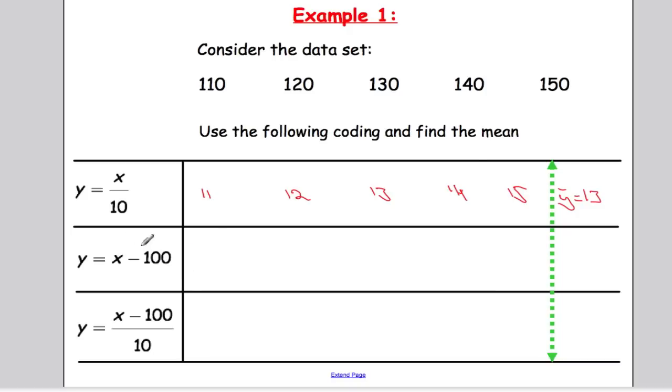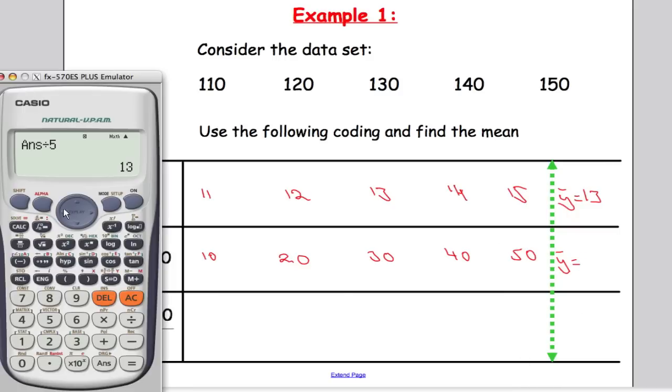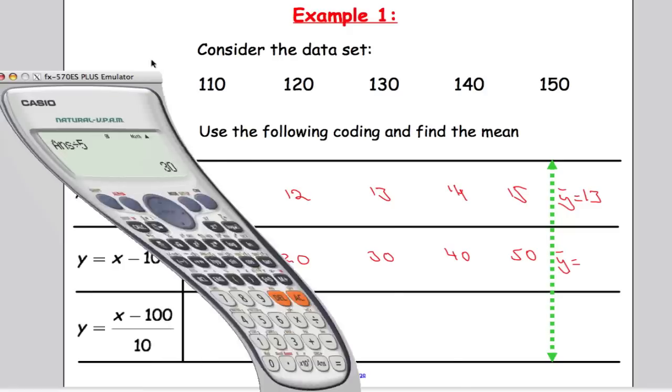Similar scenario here. 110 take away 100 gives me 10, 120 take away 100 is 20, and so on and so forth: 30, 40, and 50. We're going to work out y bar here by adding all these together and dividing by 5, and divide that by 5, we get 30.